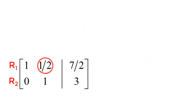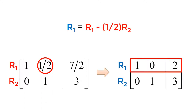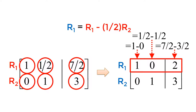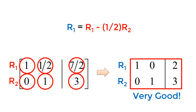The next step is to reduce one-half to 0. I will use the 1 in the second row and second column as a pivot point. Since I have one-half, I multiply one-half on the second row and then subtract from the first row. My first element becomes 1 (from 1 minus 0), my second element becomes 0 (from one-half minus one-half), and lastly my third element becomes 2 (from seven-halves minus three-halves). Congratulations — you have successfully reached the reduced row echelon form!